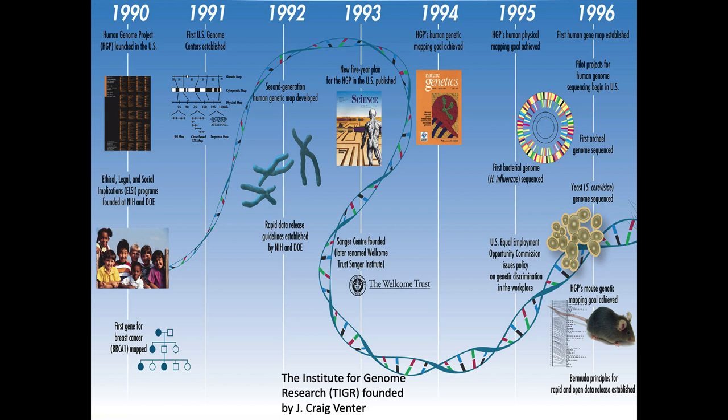In 1990, the Human Genome Project was launched. From that, we first had to establish standards for how we were going to protect people and their rights. We had our first US genome centers established in the early nineties, and then had to generate genetic maps — quite laborious to generate at the time.